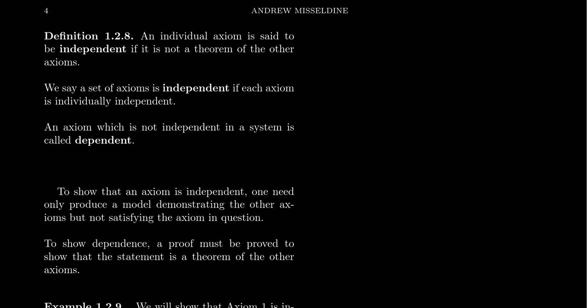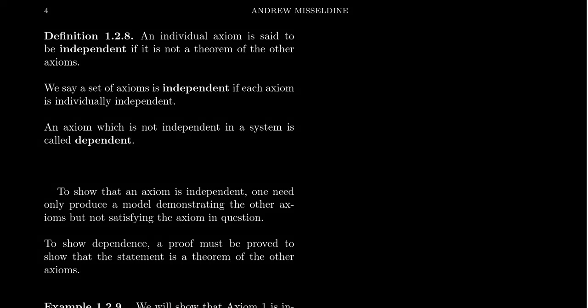I want to add some more terminology to our discussion of the axiomatic method — some adjectives to describe axioms. If you take an axiom of a system, it is a statement which is assumed to be true irrelevant of anything else. We say that an axiom is independent if it's not a theorem of the other axioms.